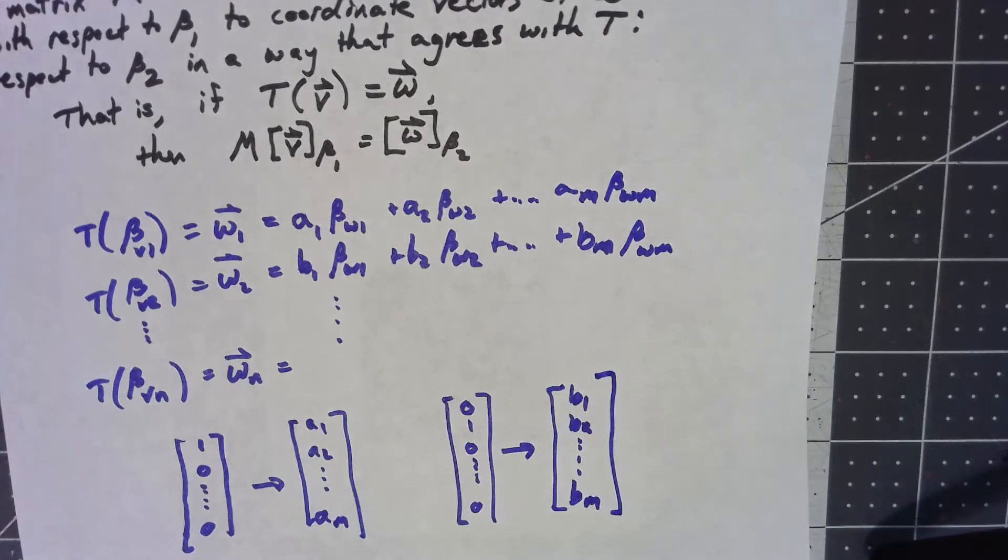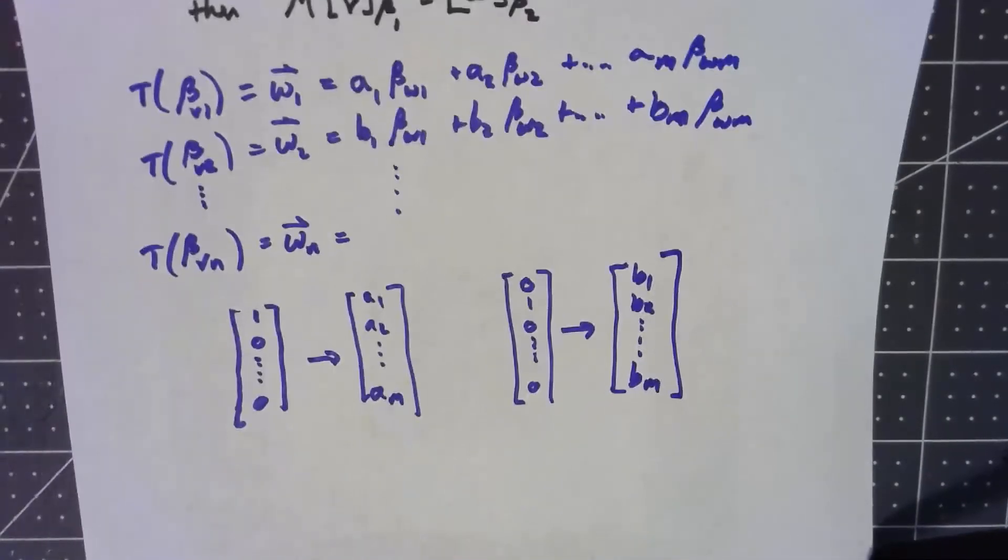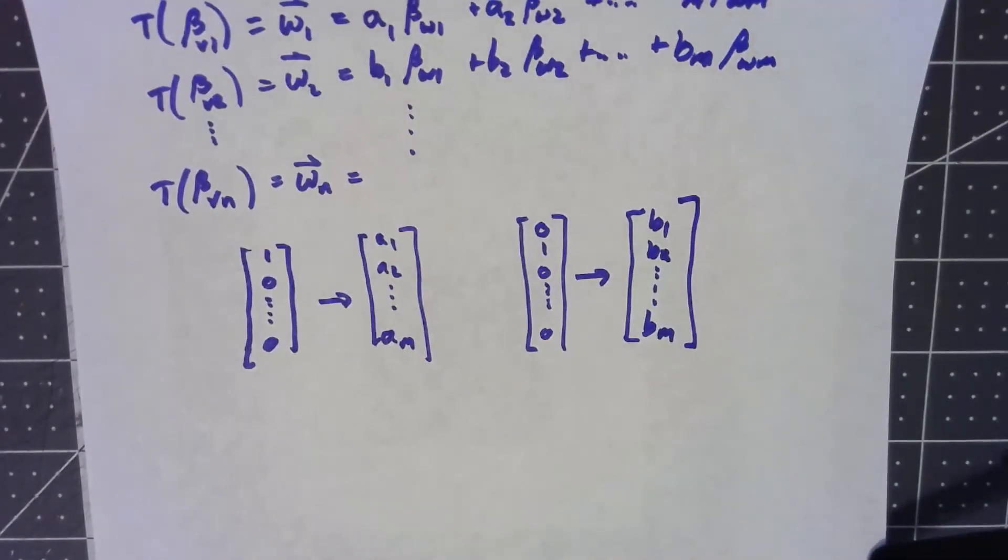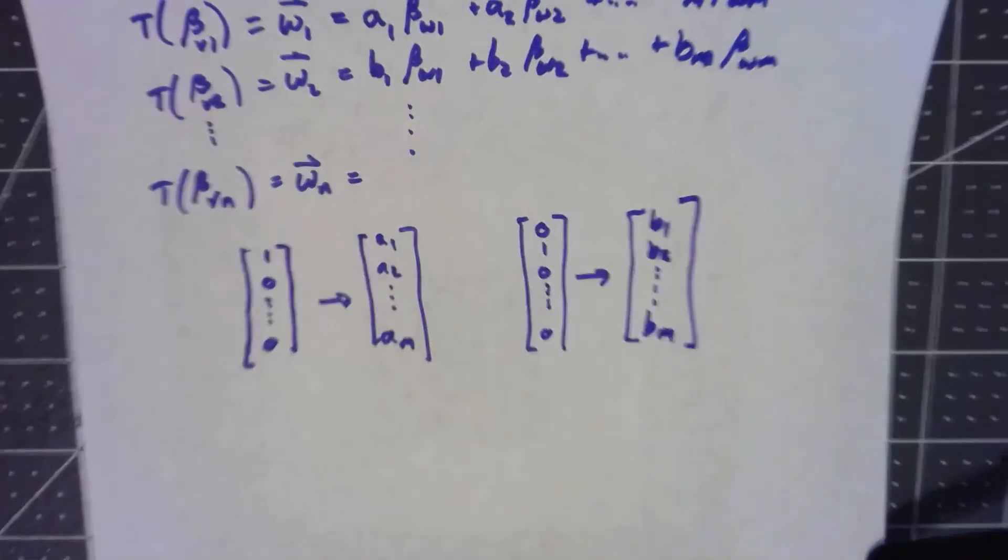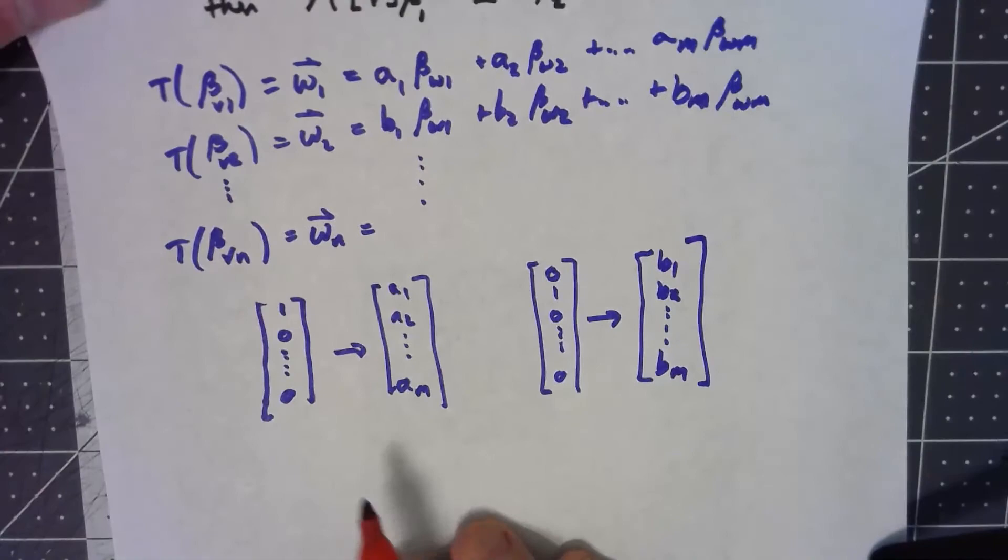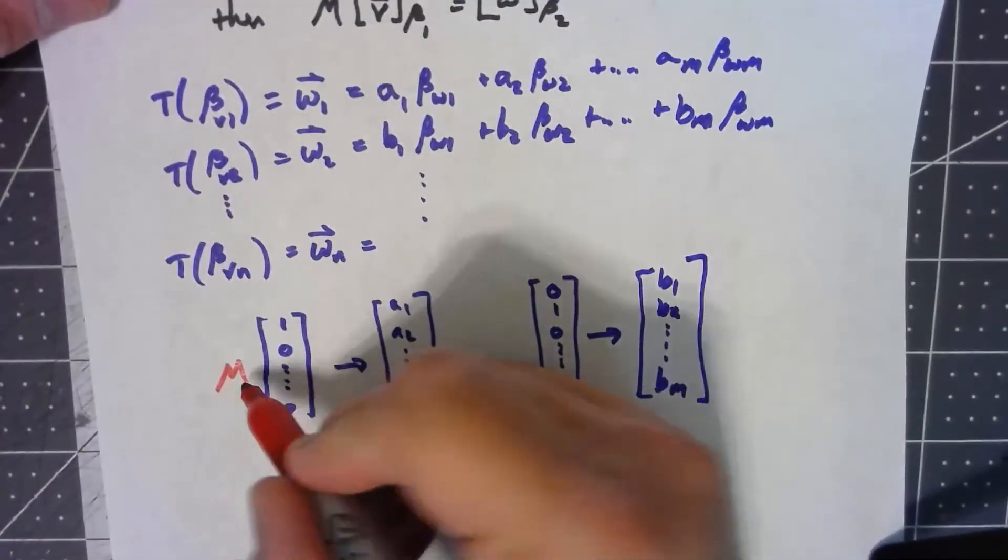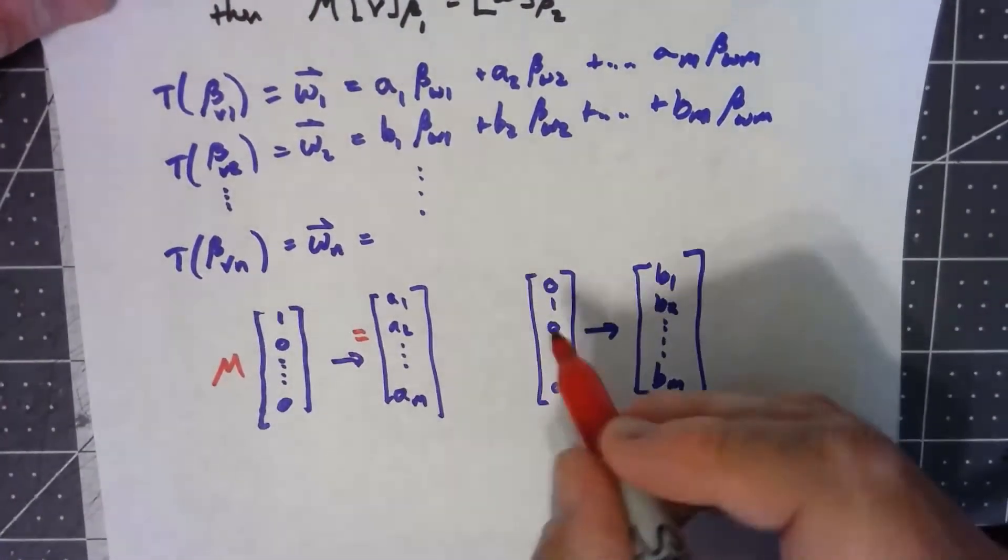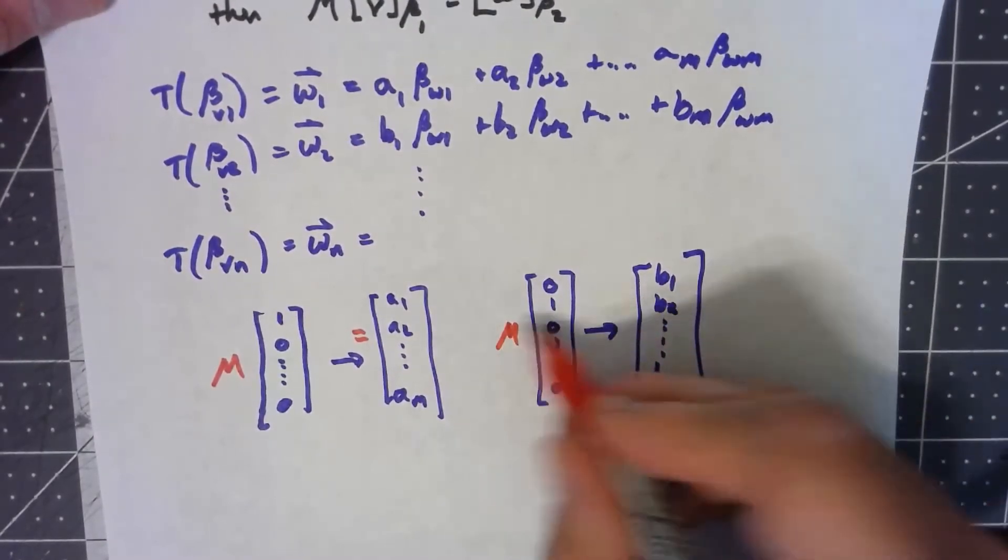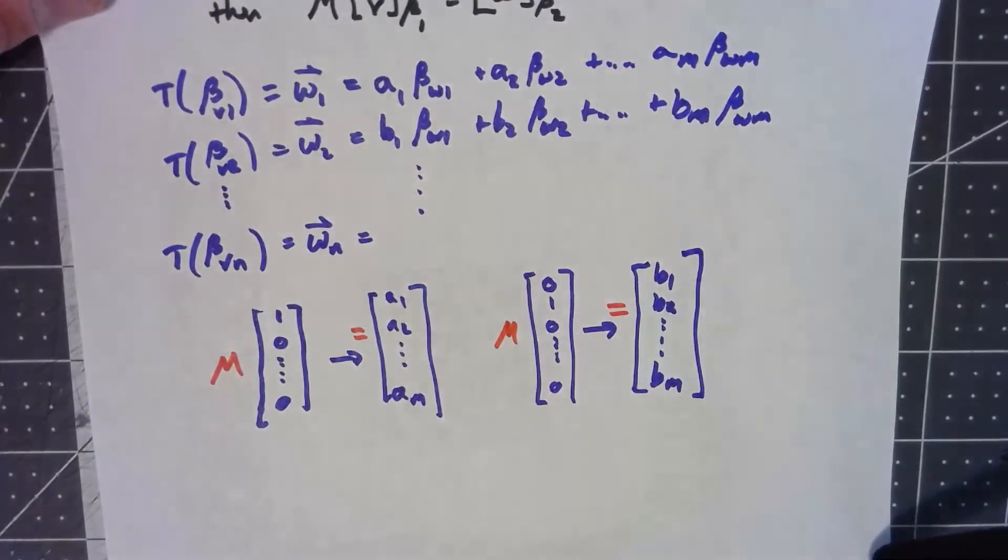Well, let's think about that though. I'm saying the whole point of this theorem is that if I've got a matrix M, if I take a matrix M times this, I get this. If I take a matrix M, the same matrix M times this, I get this.